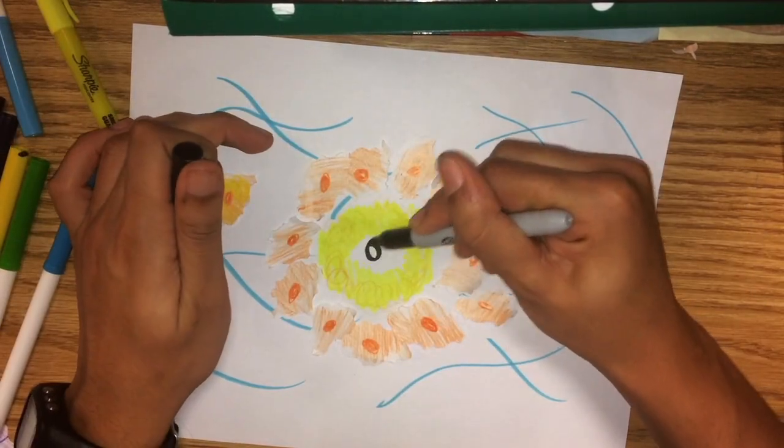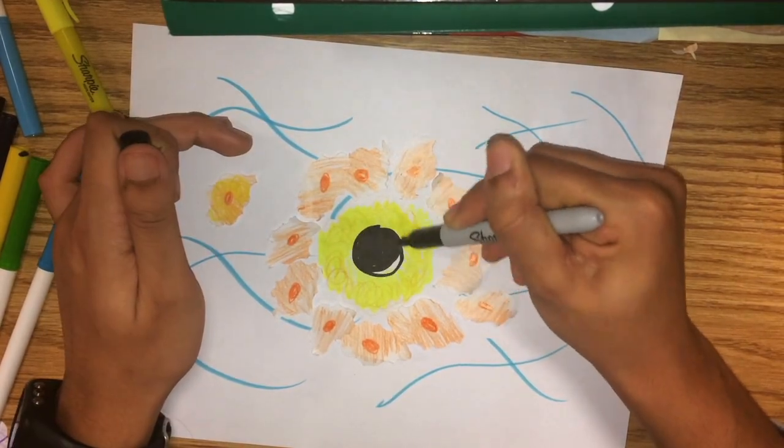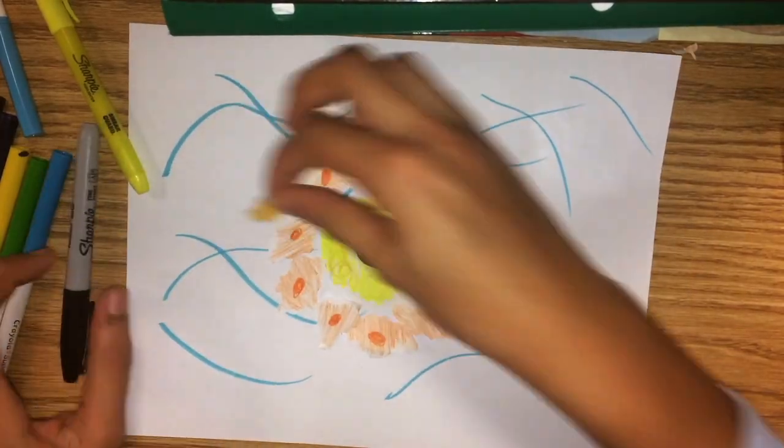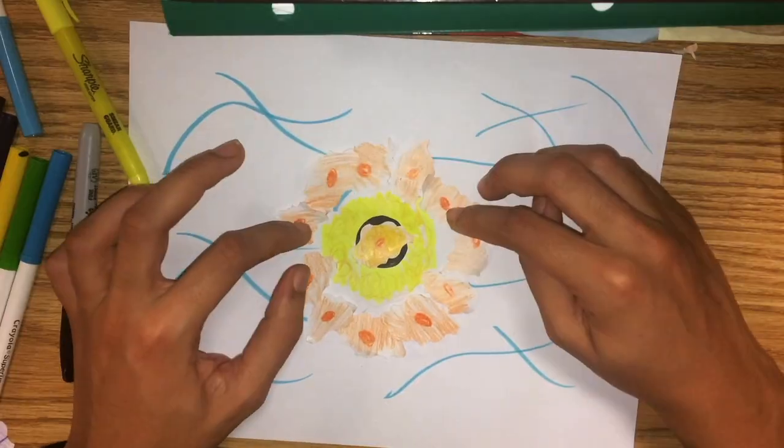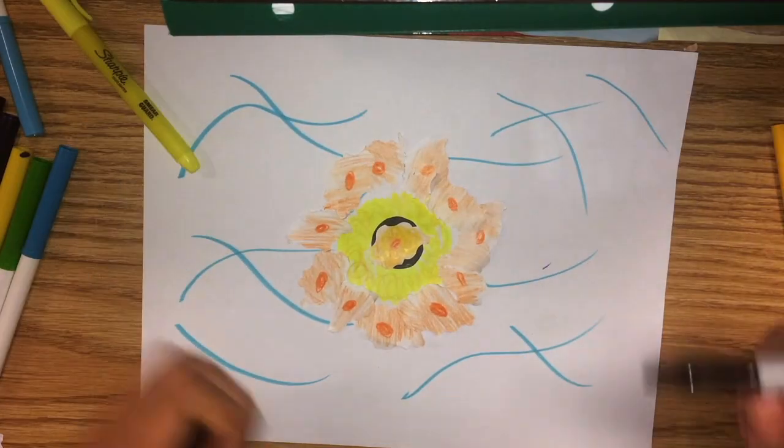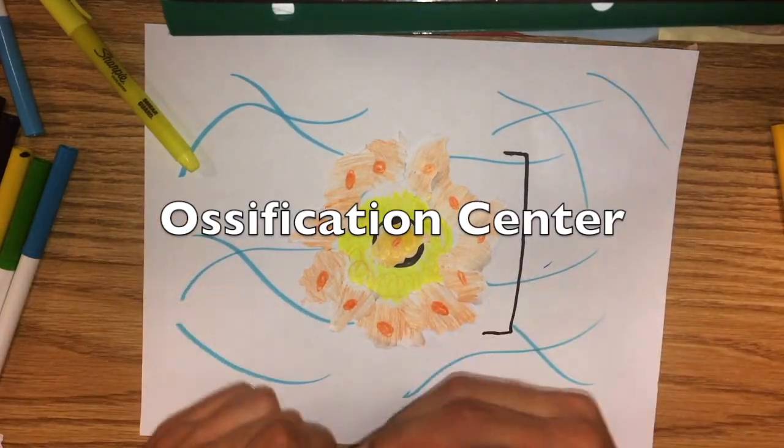When an osteoblast gets trapped inside a calcified bone matrix, it turns into an osteocyte, which is a mature bone cell. The osteocyte then gets housed inside of a lacunae. The area in which ossification occurs is called the ossification center.